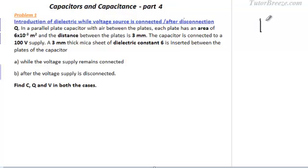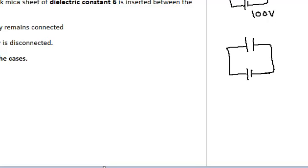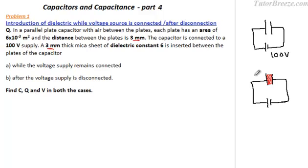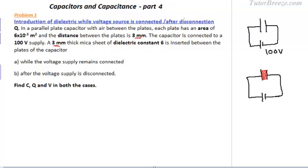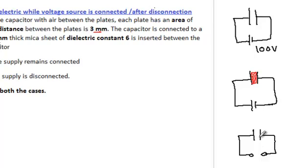This means we have three cases. First, a capacitor connected to a 100V supply. Second, while the supply is connected, a dielectric is introduced — the thickness of the dielectric is 3mm, the same as the distance between the plates, so the entire space between the plates is filled with the dielectric. In the third case, the power supply is disconnected before the dielectric is introduced between the plates.